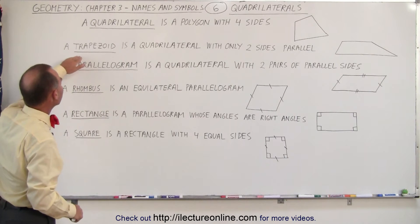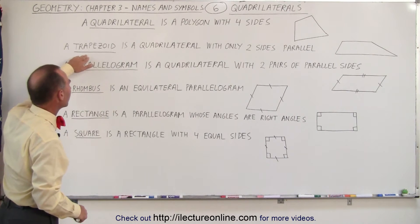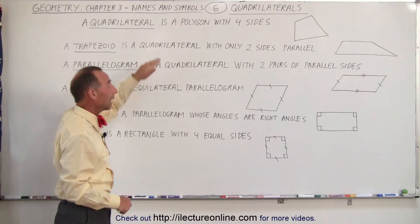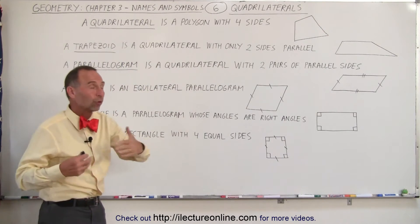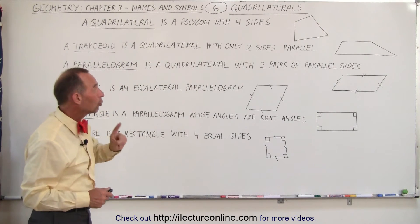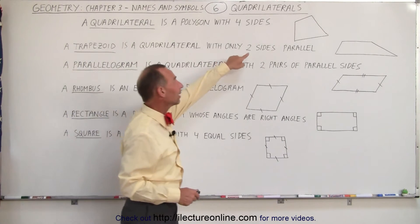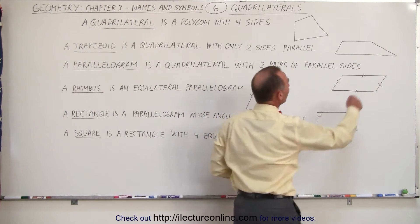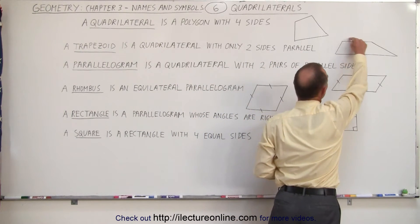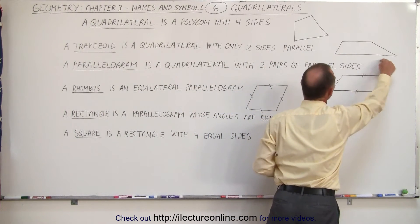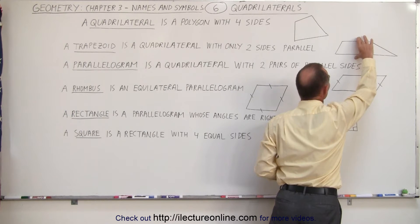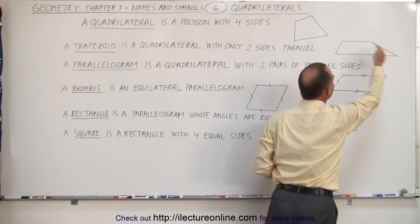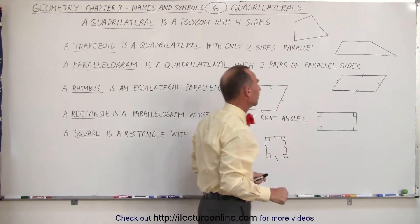The first one is called a trapezoid. A trapezoid is also a quadrilateral — it has four sides and four angles, but two sides are parallel. Here's an example where the top and the bottom side, these two, are parallel to one another. The other two are not. So this is called the trapezoid.